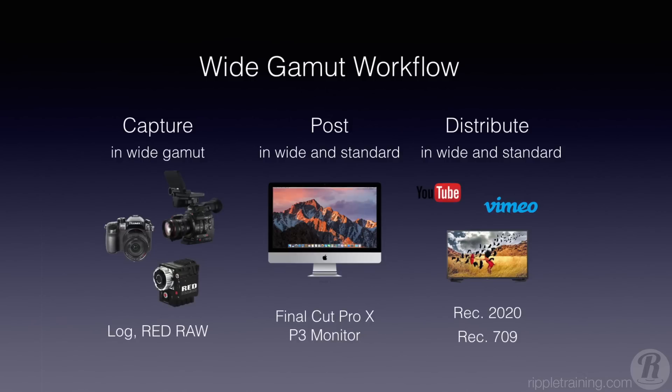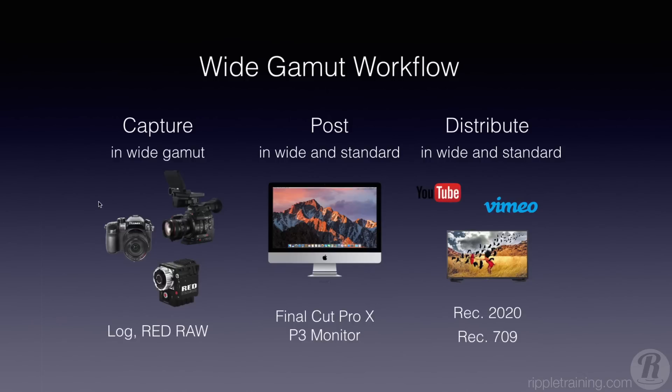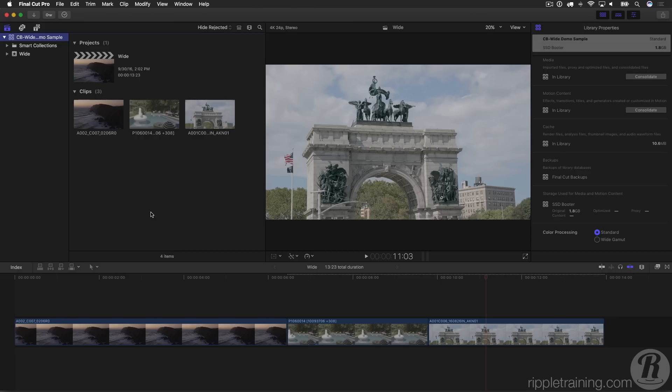The wide gamut workflow is: you capture in Rec. 2020, either in log or Red Raw; you work in Final Cut Pro X in Rec. 2020 on a P3 monitor; then you distribute — usually two different versions, because you'll do Rec. 2020 for folks that can see it, but you also need to distribute a Rec. 709 submaster. The key is how you work in the wider space but still deliver in traditional HD delivery.